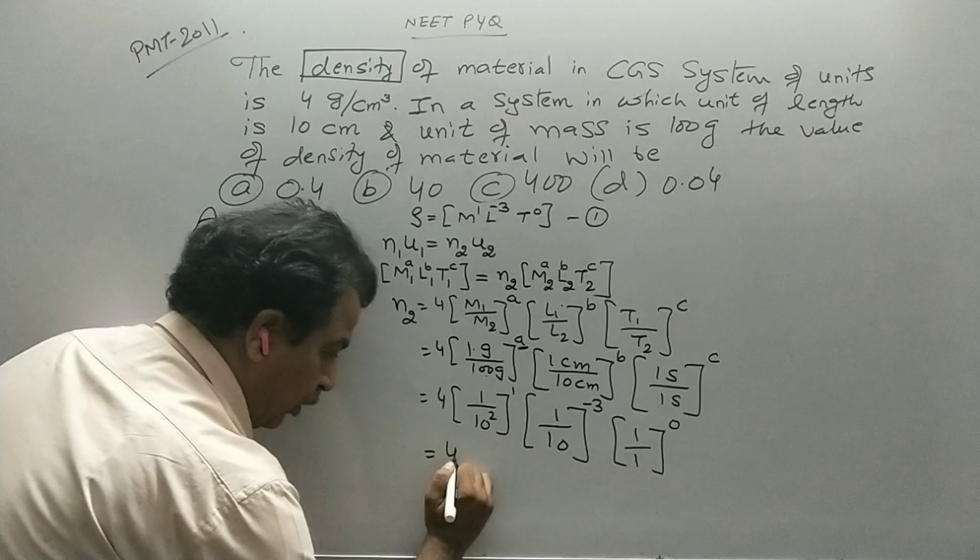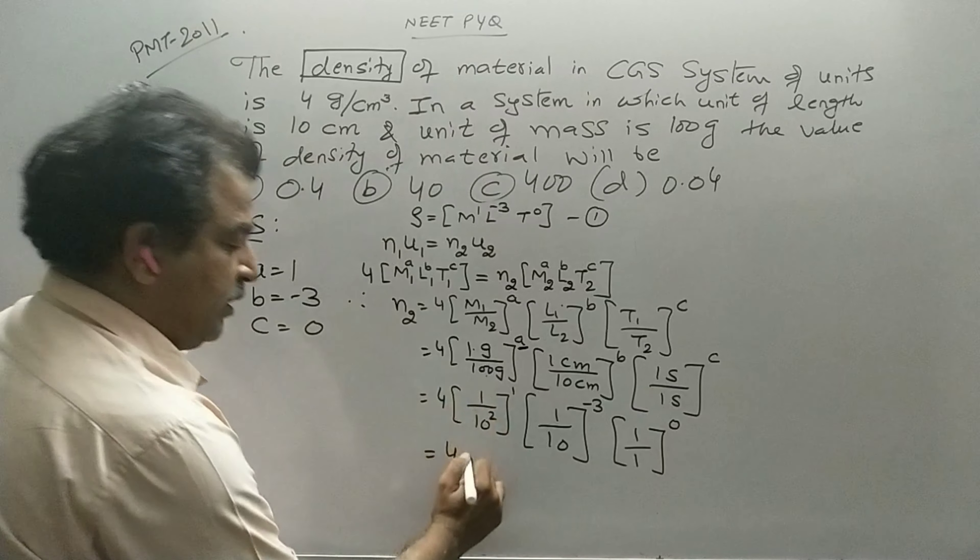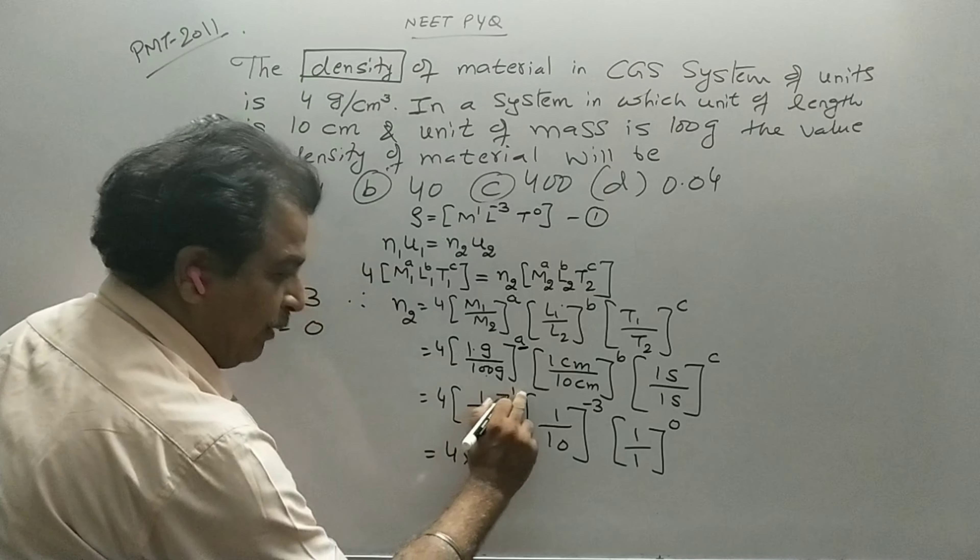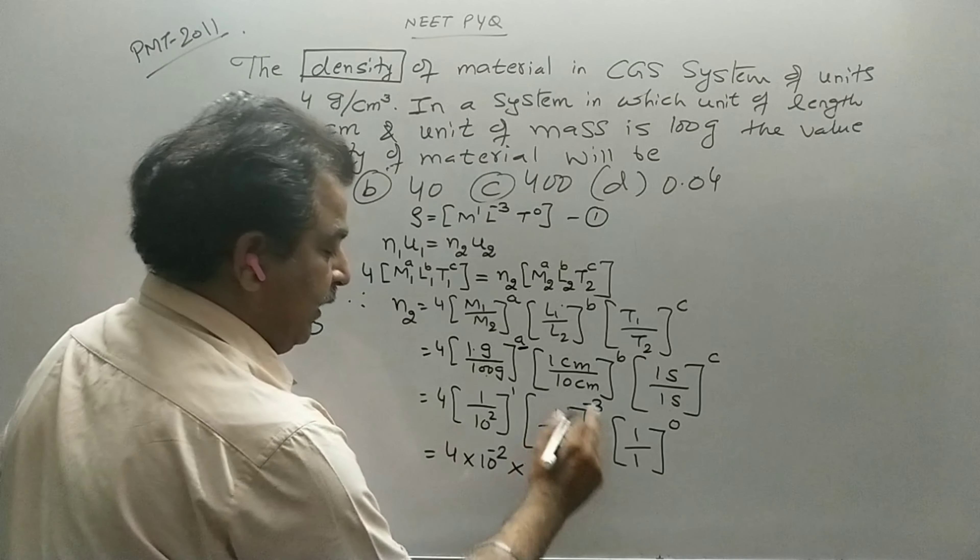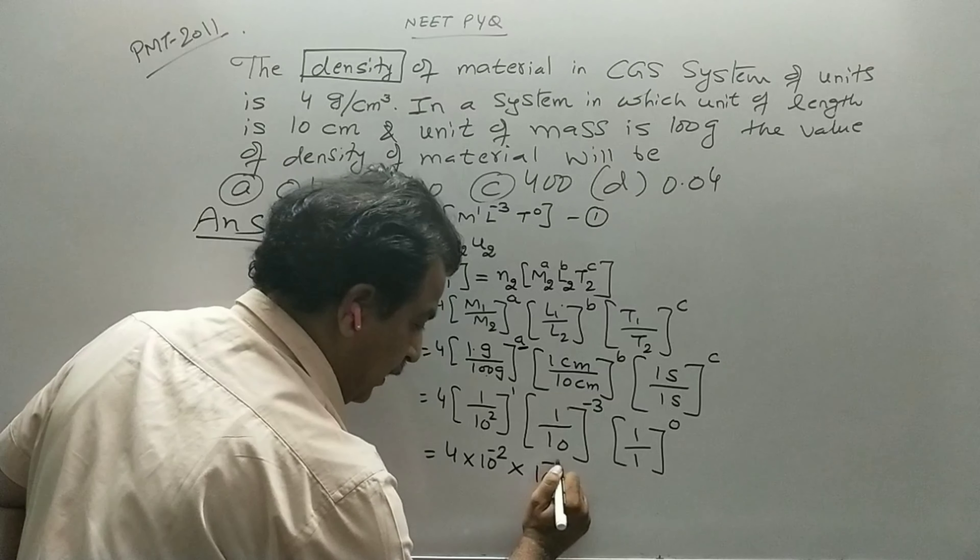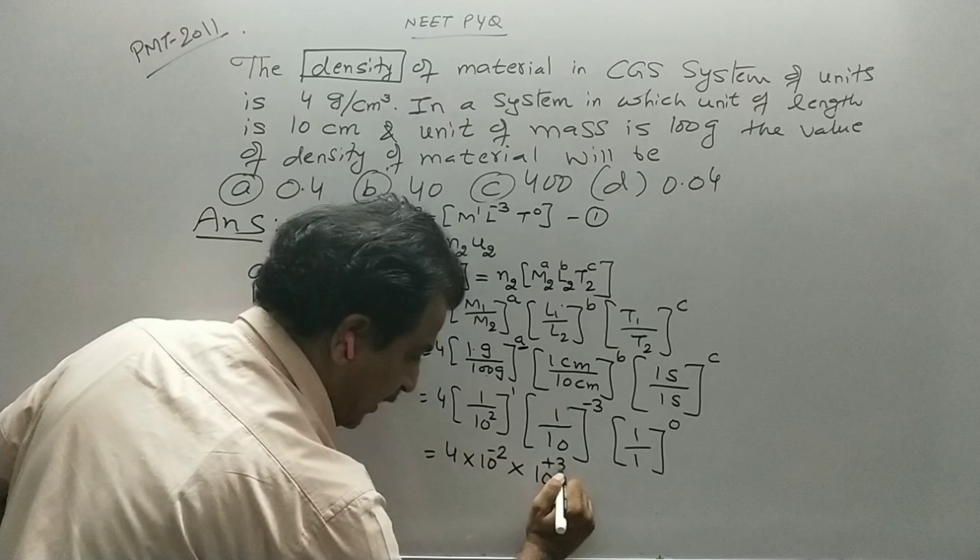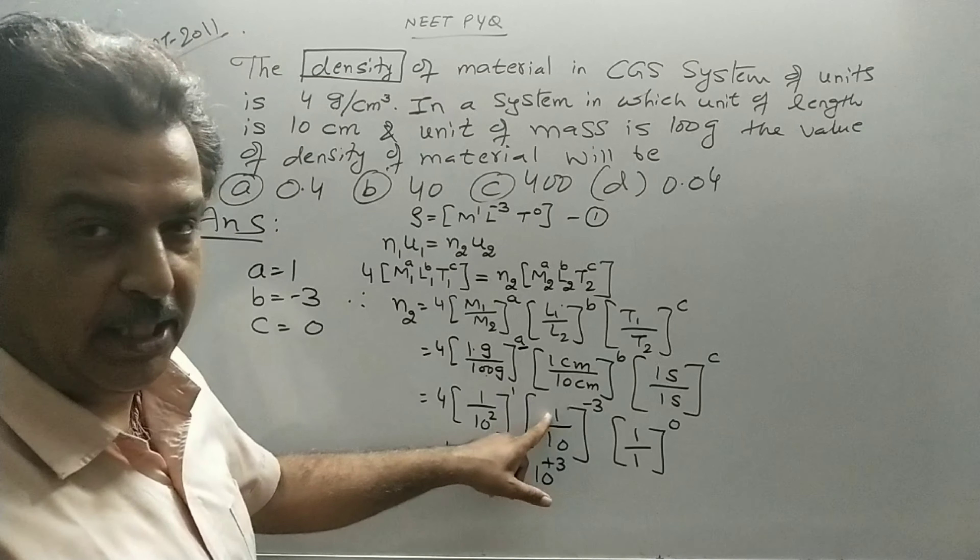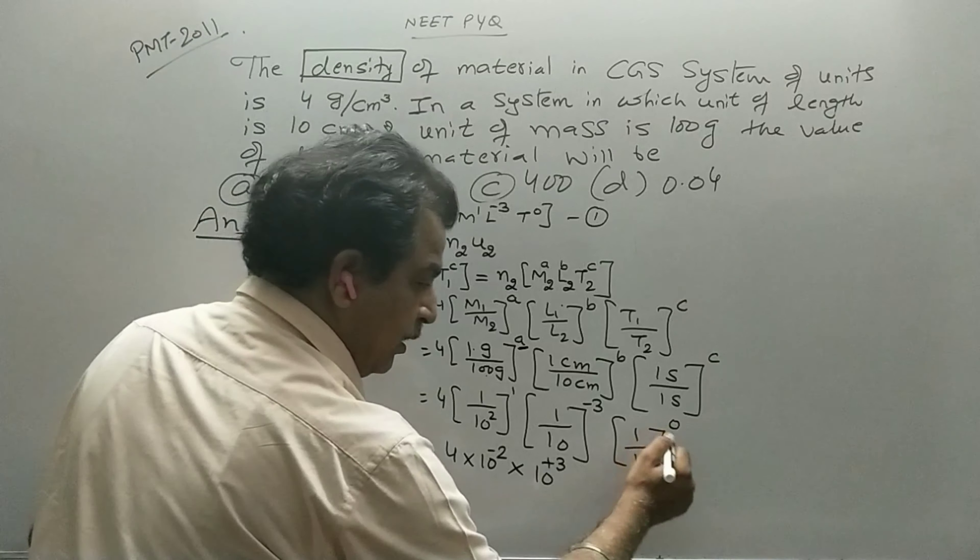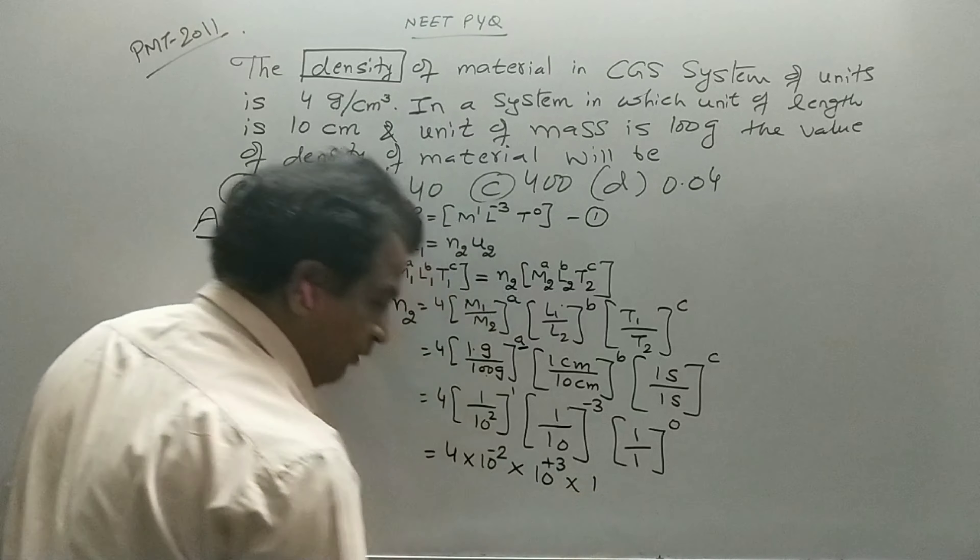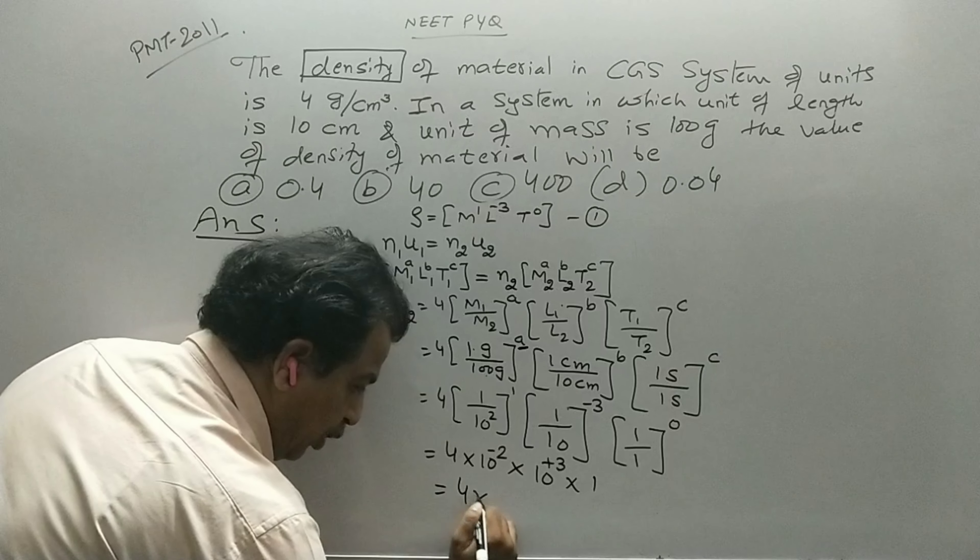This is equal to 4 into 10 to the minus 2, multiply by 1 into 1 divide by 10, that is 10 to the minus 1, power B is minus 3, so it becomes plus 3, so 10 to the 3. This becomes 1, 1 divided by 1 is 1 and power is 0. So this becomes 4 into 10.